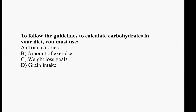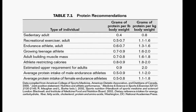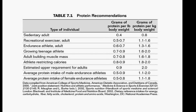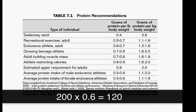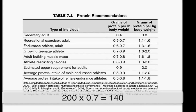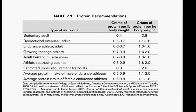Now let's look at protein. Here's a chart from our text. Note that protein recommendations are based upon activity level, age, and type of activity. To calculate protein, you'll want to follow the same path — multiply body weight by the number of grams based on the type of individual. Our 200-pound adult endurance athlete will fall into the category of 0.6 to 0.7 grams of protein per pound of body weight. We'll multiply 200 times 0.6 to get 120 grams and 200 times 0.7 to get 140 grams of protein. Note that athletes building muscle mass — strength-building athletes — have higher protein needs.